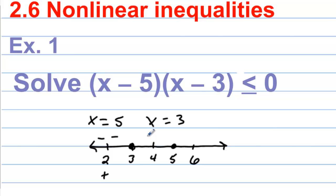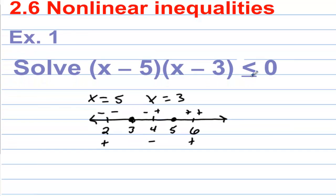Let's test 4: 4 minus 5 is negative and 4 minus 3 is positive, and a negative times a positive is a negative. So anything in between 3 and 5 will have a negative value. When we plug 6 in, we get a positive and a positive — that's going to be positive. Now we want the values that are negative, less than or equal to 0. So the answer is 3 to 5, and we're going to include both 3 and 5.